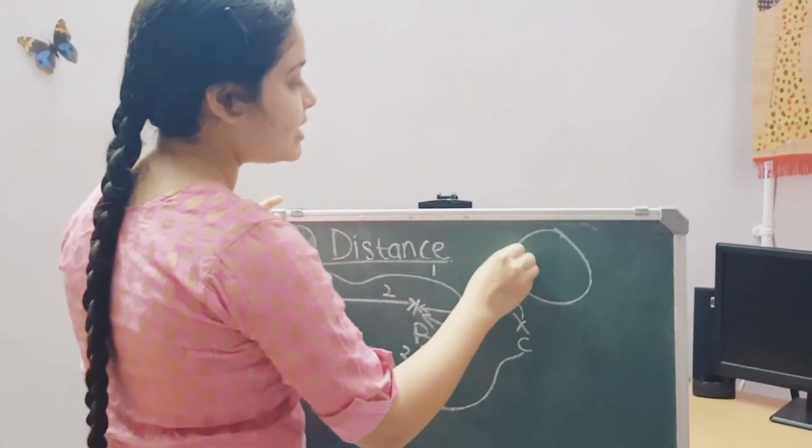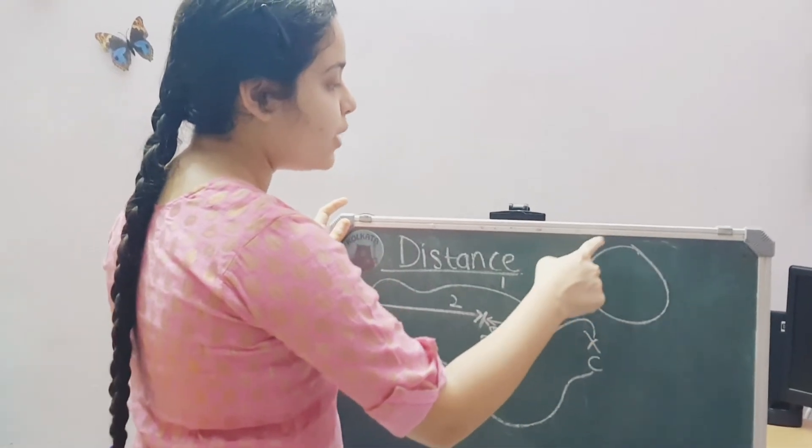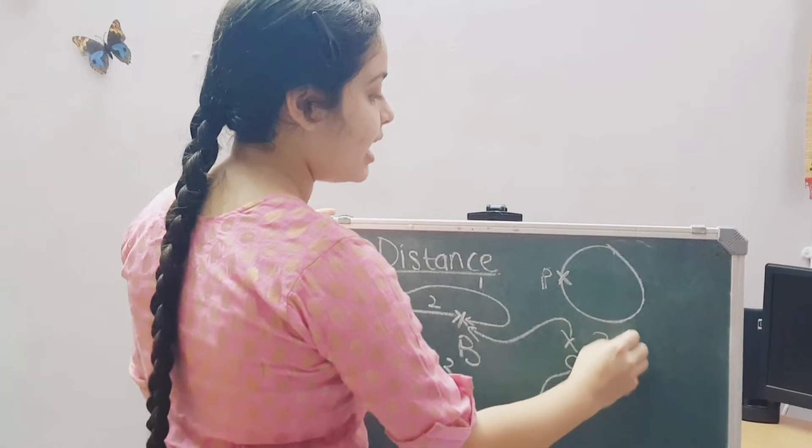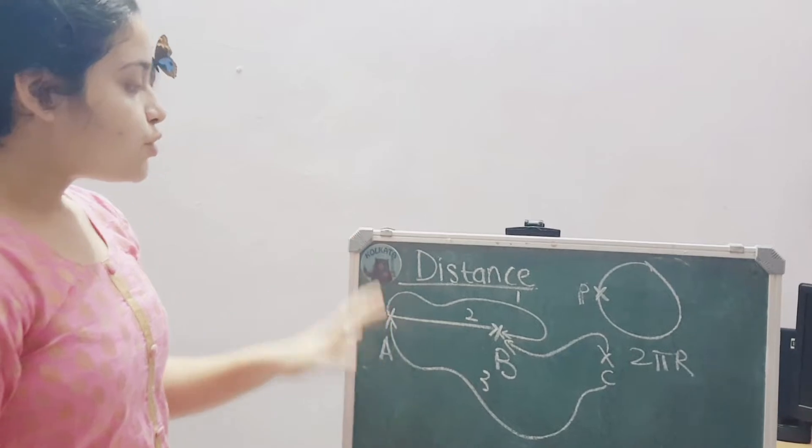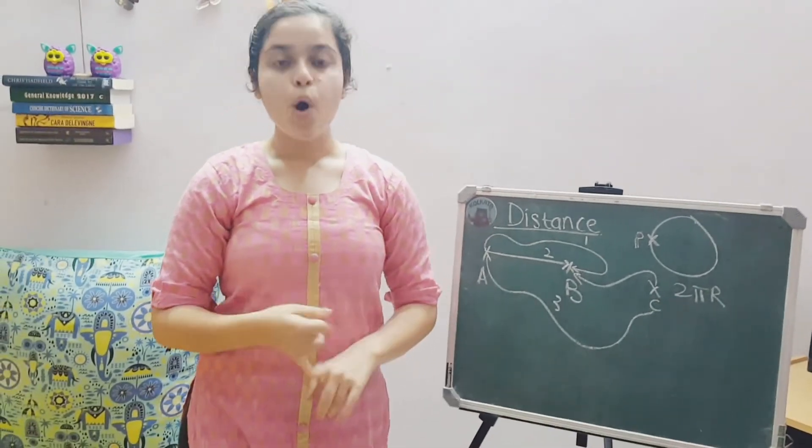In the case of a circle, if I say I start from point P and I want to take a trip around and come back to point P. Here, my distance will be given by 2πr where r is the radius of this circle. So, remember that distance can never be 0 or negative.